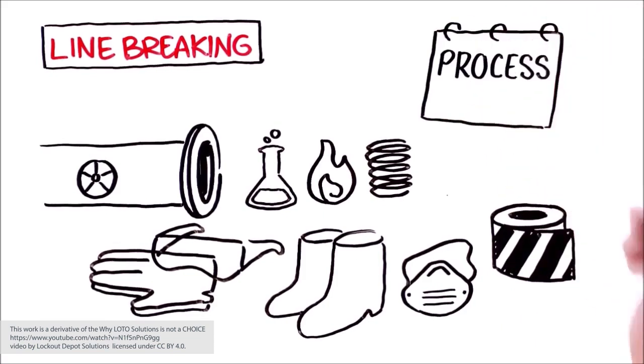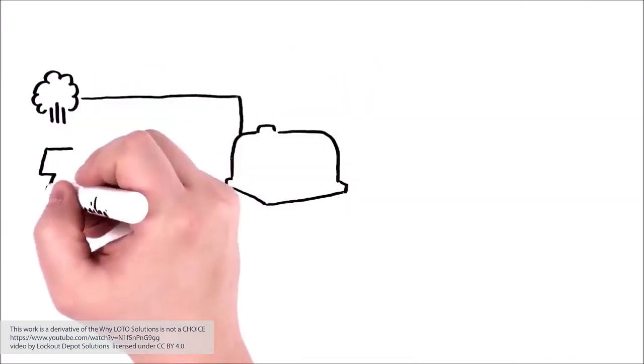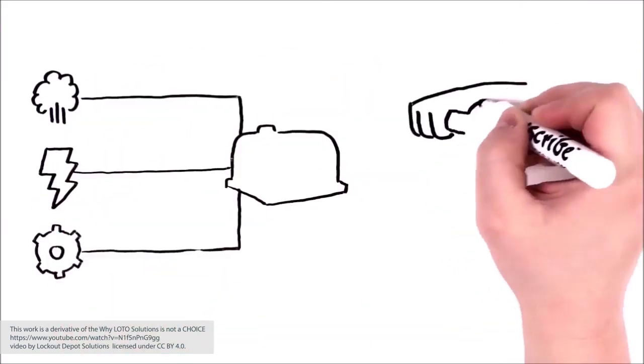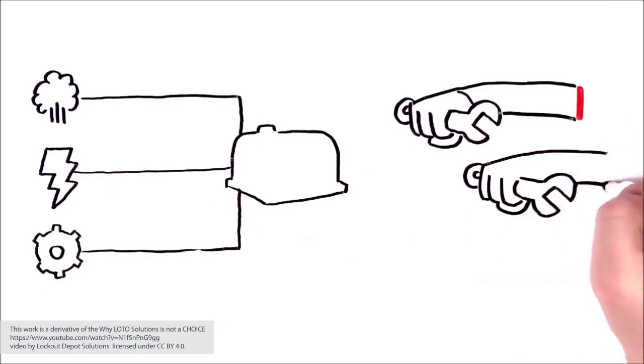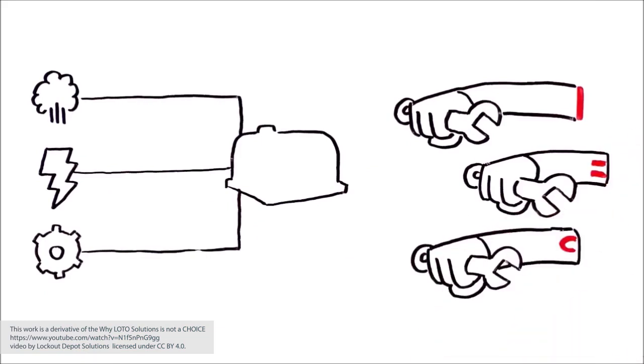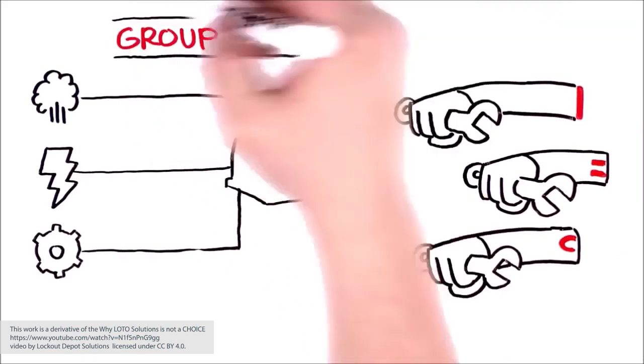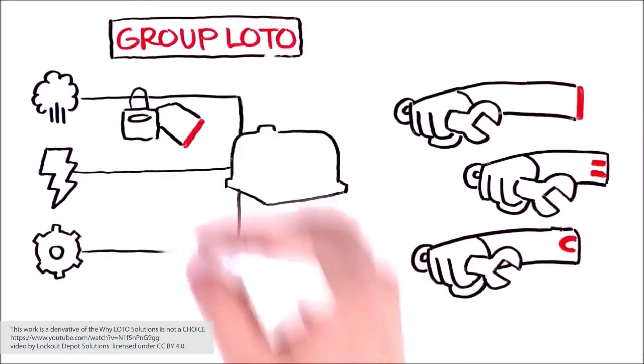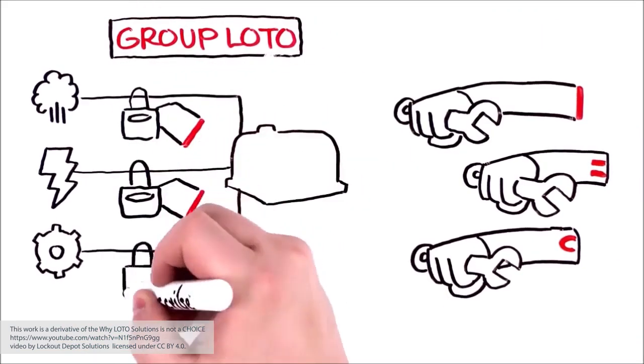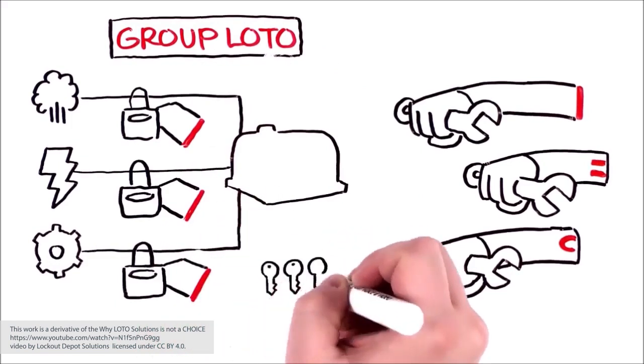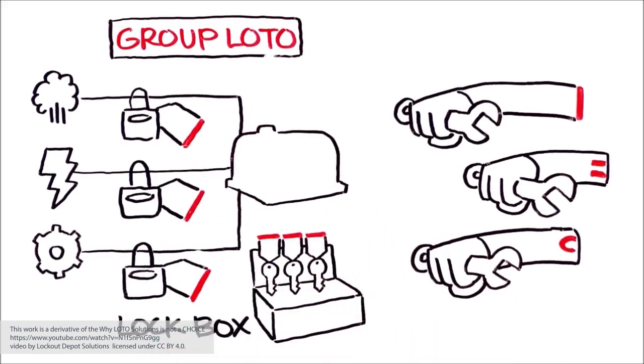What if the equipment has many energy sources, plus it's not just you—it's a group of people performing a service activity on the equipment? In this type of situation, group LOTO can be done. With group LOTO, it's typical to apply a different lock and tag to each energy source, then place all the keys from these locks in a lock box.